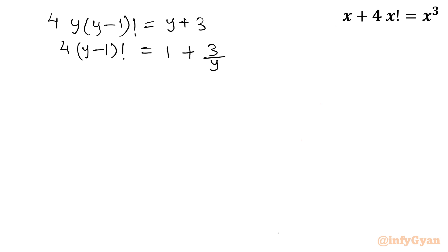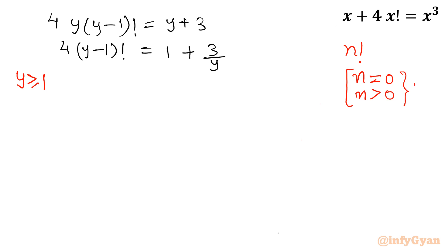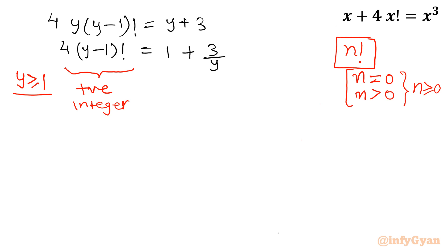Now we generate some logical arguments. For n factorial to be defined, n must be 0 or a positive whole number. So y−1 must be a whole number, meaning y must be greater than or equal to 1. Also, the left hand side is always a positive integer, so the right hand side must also be a positive integer.